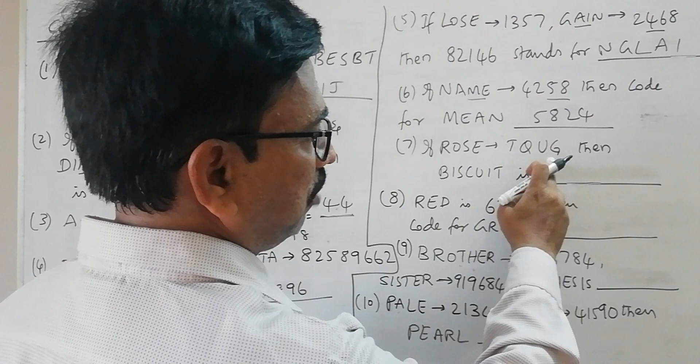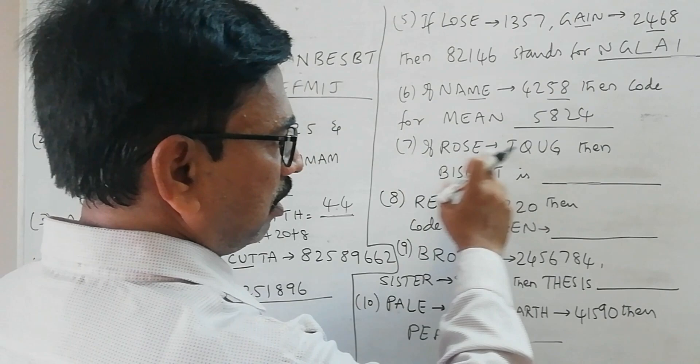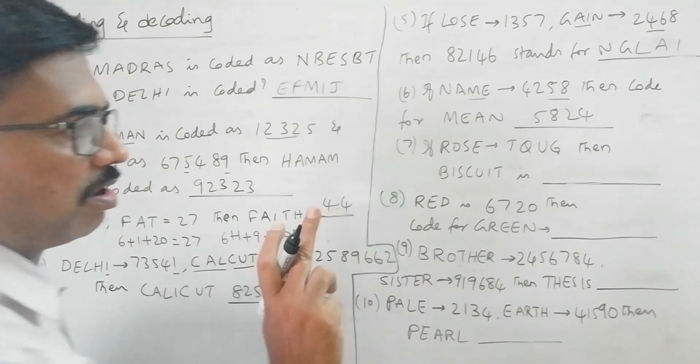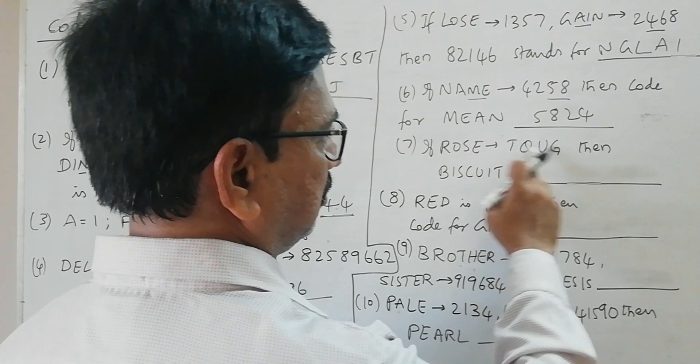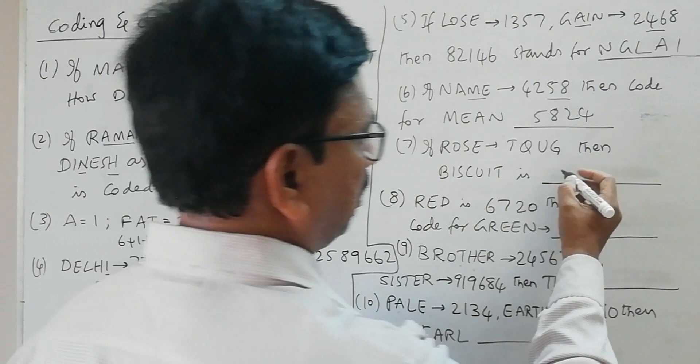Here ROSE is coded as TQUG, then what is the code for BISCUIT? So R to T, T is R plus 2, that means R then S and T.